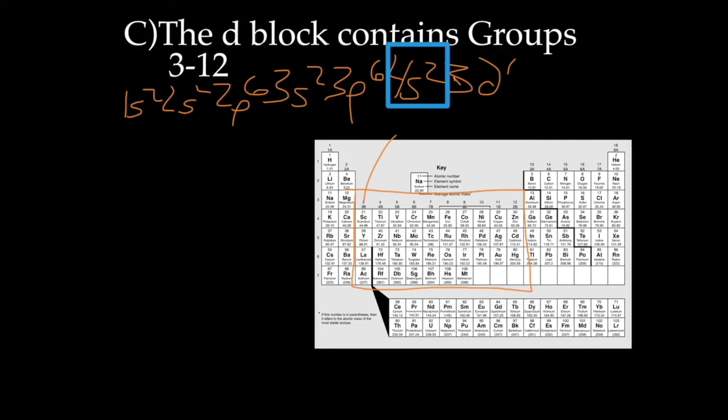So the d-block, we end up filling electrons in the d, even though they're not the valence. So these guys here end in 3d1, 3d2, 3d3, etc.